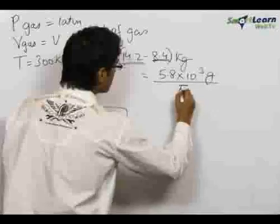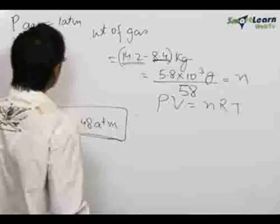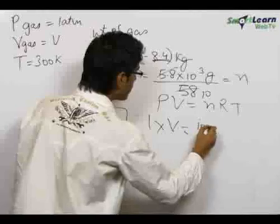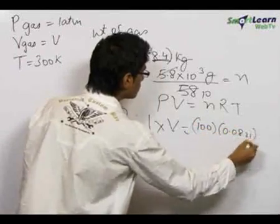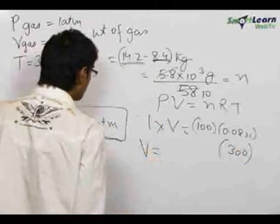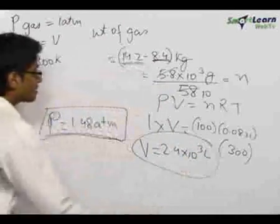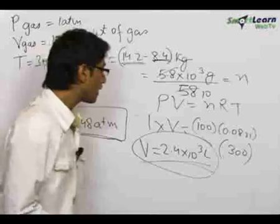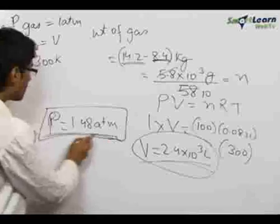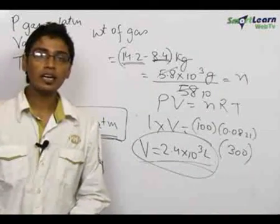Dividing 5.8 into 10³ grams by 58, the molar mass, we get 100 moles. Using PV = NRT for the leaking gas: 1 into V equals 100 into 0.0821 into 300. The volume comes out to 2.4 into 10³ liters. Therefore, the volume of gas used up is 2.4 into 10³ liters, and the final pressure of gas inside the cylinder is 1.48 atmospheres. These are our two final answers.